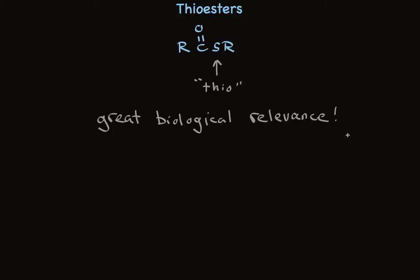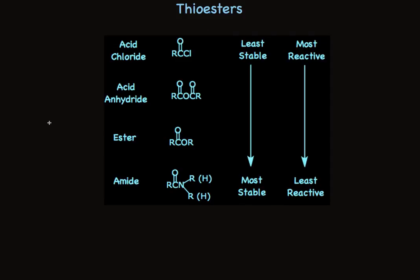First, let's take a look at their relative reactivity compared to other carboxylic acid derivatives. The four derivatives I've discussed have distinctly different reactivities: the acid chlorides being by far the most reactive, anhydrides reacting with water readily, esters not so much—they're actually stable in the presence of water—and amides very, very stable in the presence of many nucleophiles.